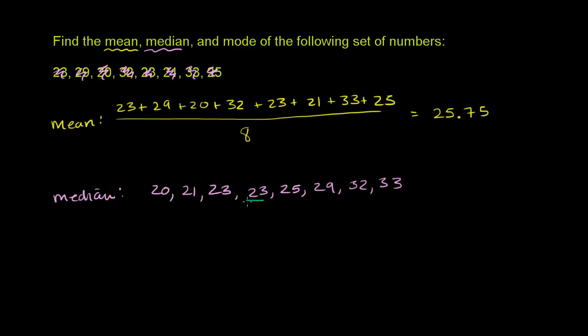So 23 will be one of them. That by itself can't be the median because there's 3 less than it and there's 4 greater than it. And 25 by itself can't be the median because there's 3 larger than it and 4 less than it. So what we do is we take the mean of these two numbers and we pick that as the median. So if you take 23 plus 25 divided by 2, that's 48 over 2, which is equal to 24.